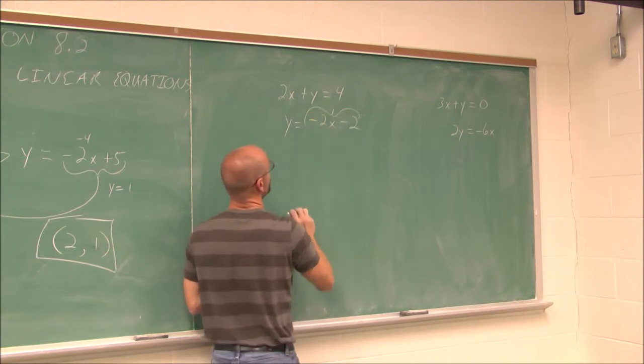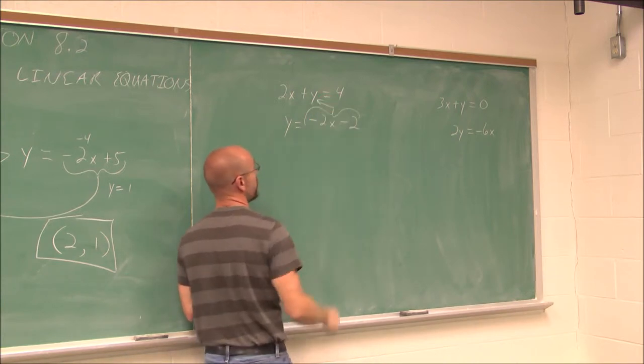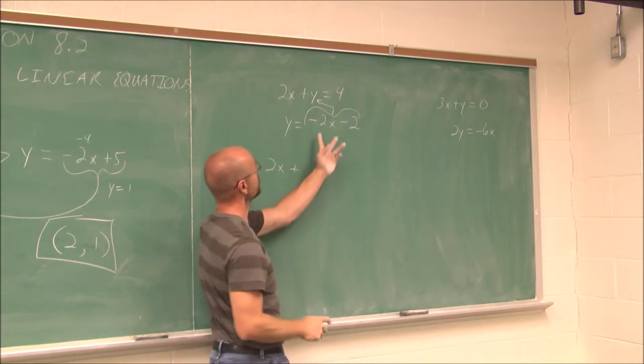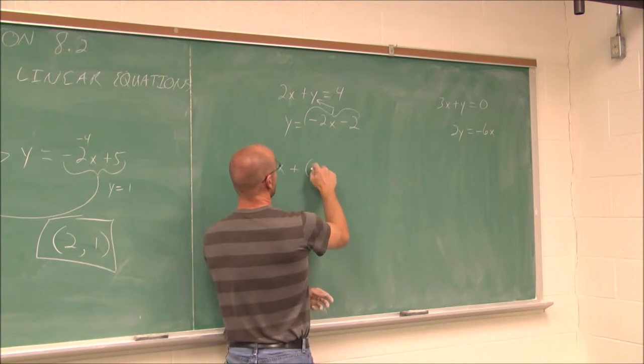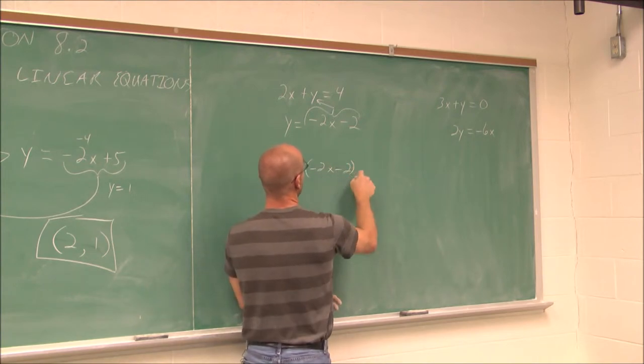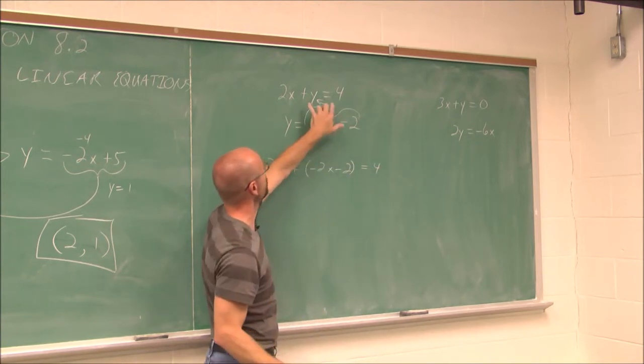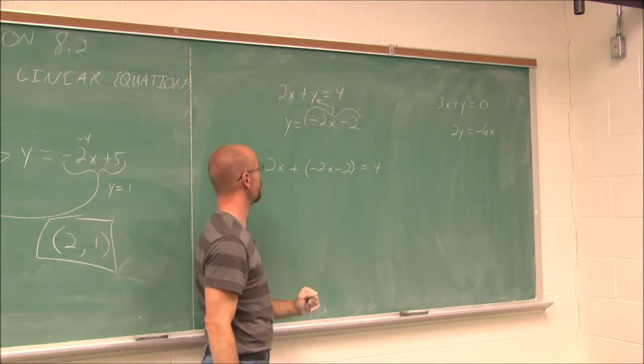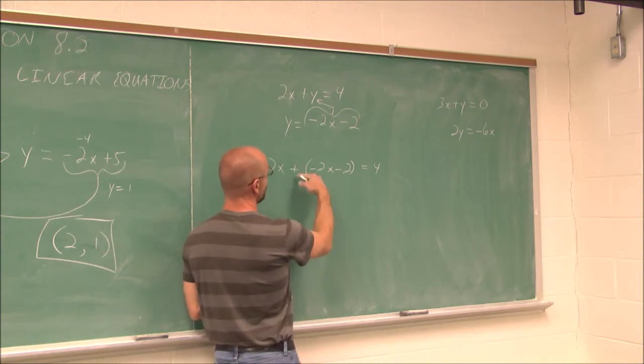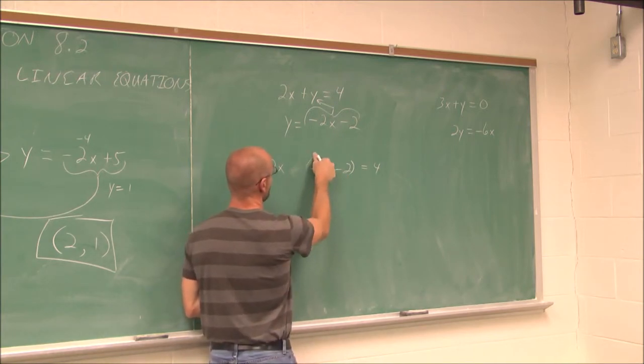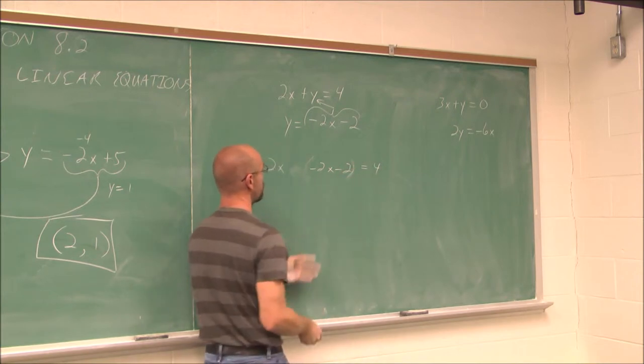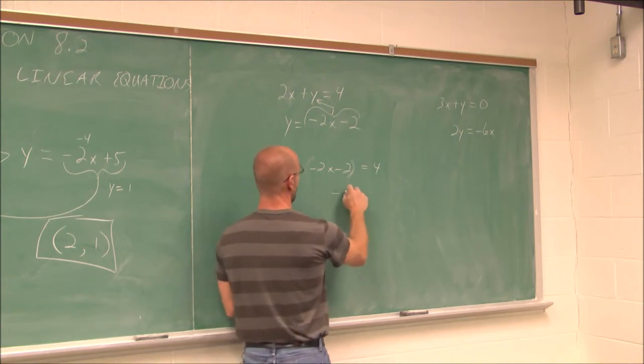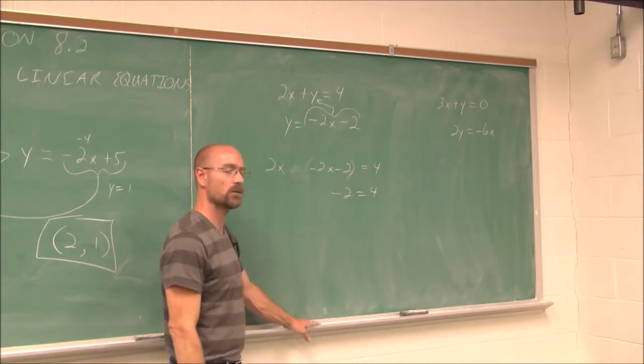So if y equals this value, I can plug it into the other equation for y. So I get 2x plus y, which is this quantity, negative 2x minus 2, will be equal to 4. So I just took this and plugged it into there. You can see my 2x. The y becomes this value. And it's equal to 4. And if I simplify this, well, these parentheses aren't necessary because a positive distributed through doesn't change any sign. So 2x minus 2x is 0x's. And that would just leave me with negative 2 equals 4.